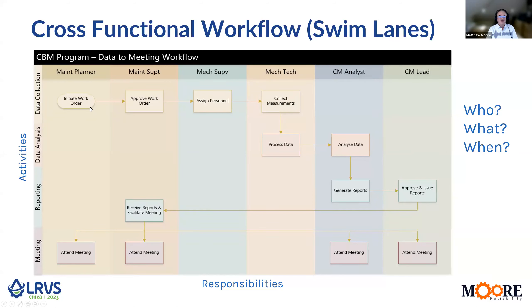Our maintenance planner may initiate the work order in the CMMS system, tell the maintenance superintendent this is now to be carried out. He'll approve that it's scheduled and he has people available. The mechanical supervisor may assign his technicians to collect the data. Those technicians collect data, which then gets passed on to the analysis team. Those analysts then analyse the data and generate reports. It's always useful to have a second opinion and a condition monitoring lead that approves and issues those reports back to the maintenance department. Then the maintenance department, once they've read the report, will facilitate a meeting involving the stakeholders — the maintenance planner, the maintenance superintendent, and the analysts identifying why they think there's a problem.